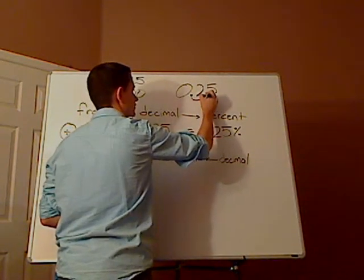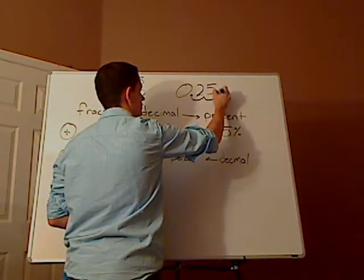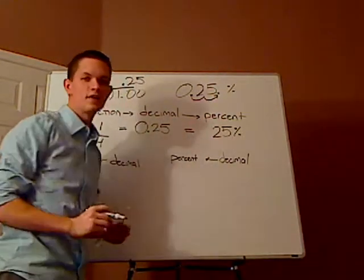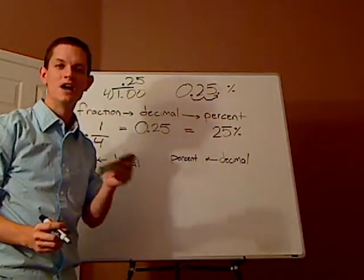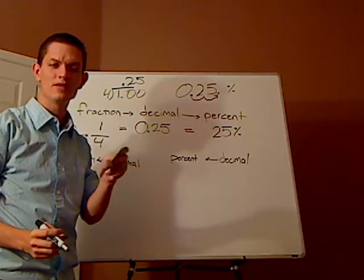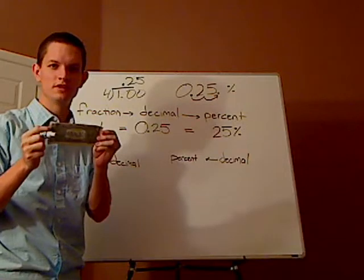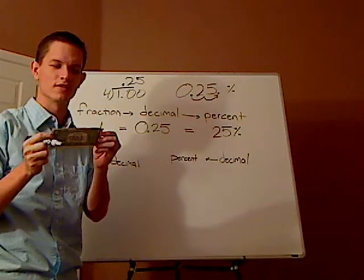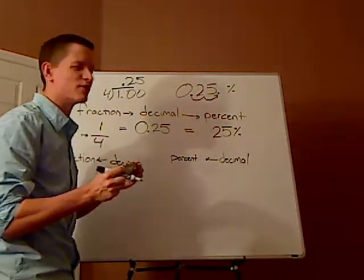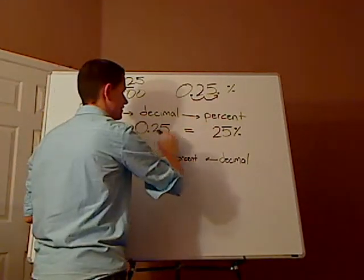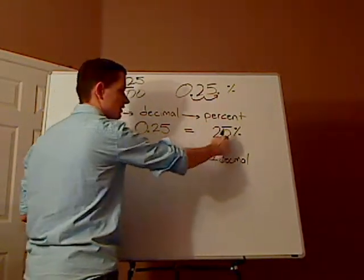Because it's out of how much? It's out of 100, right? How many cents makes up this dollar? 100 cents, or 100%. Now, I'm confusing myself. But what you're doing is you're multiplying this by 100 to get this.